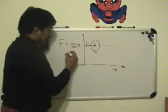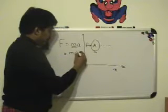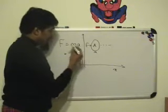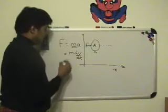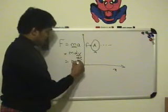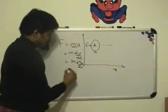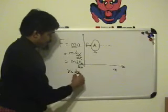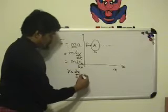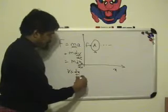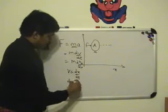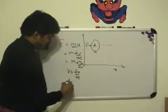And again the acceleration is given by m dv by dt, which is rate of change of velocity, which is nothing but m dx square by dt square. That is v is equal to dx by dt, which is rate of change of displacement. And dv by dt is acceleration.